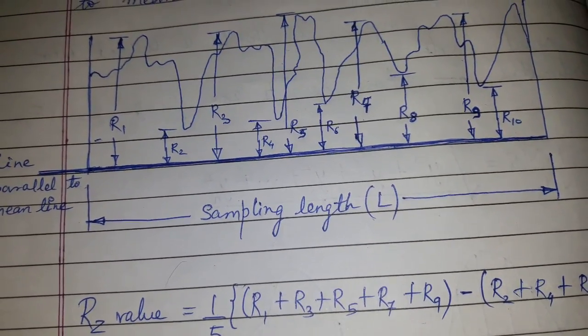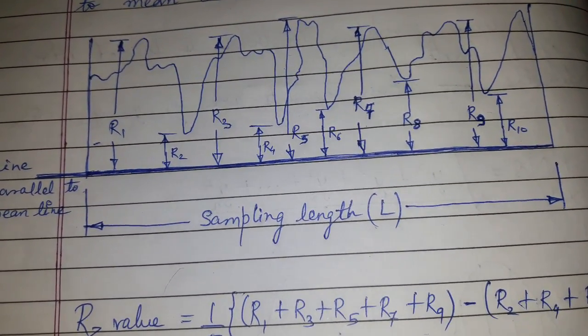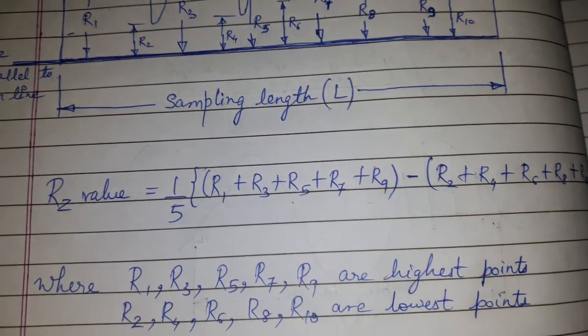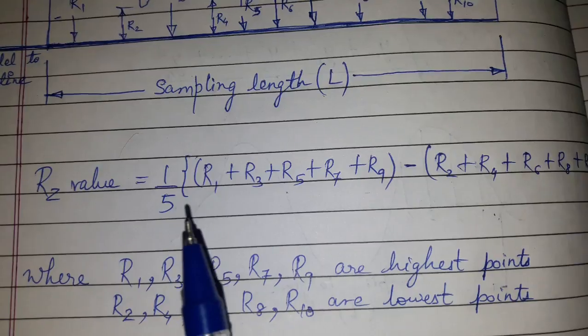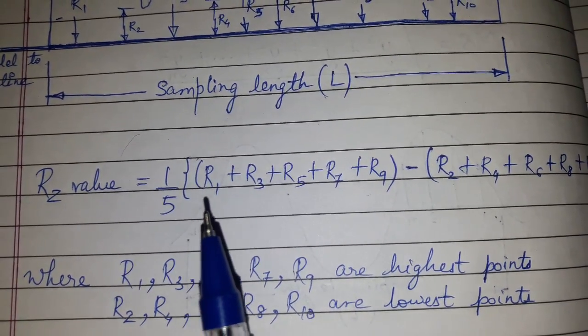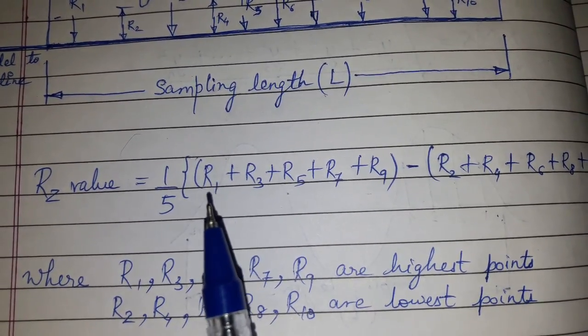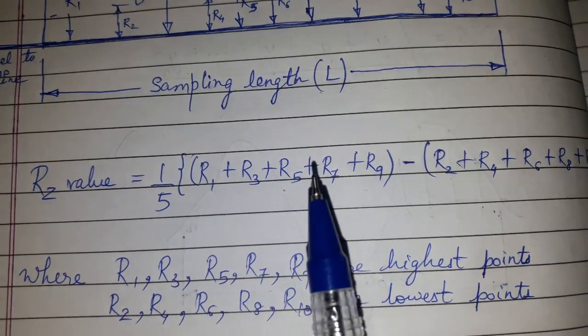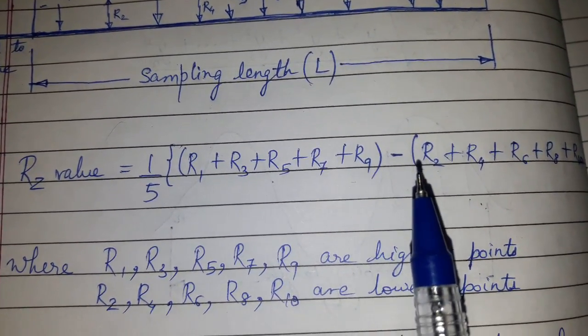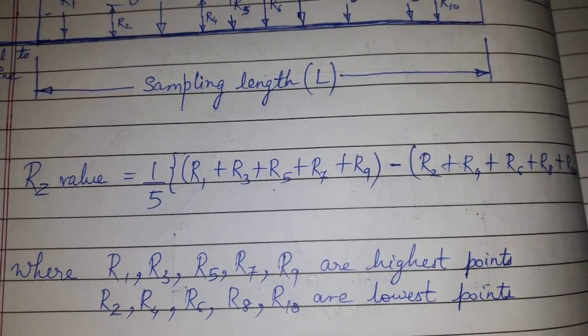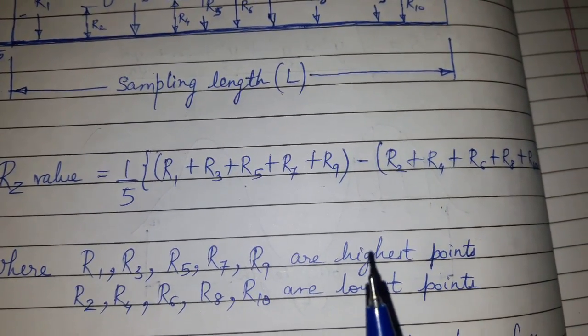So this is RZ. RZ is calculated as: RZ value = 1/5 × [(R1 + R3 + R5 + R7 + R9) - (R2 + R4 + R6